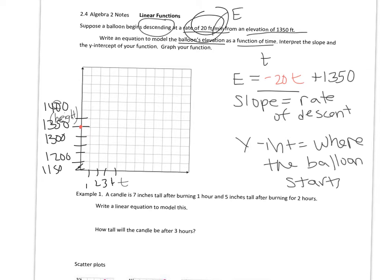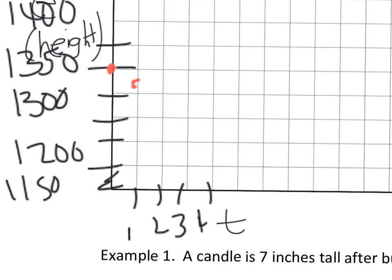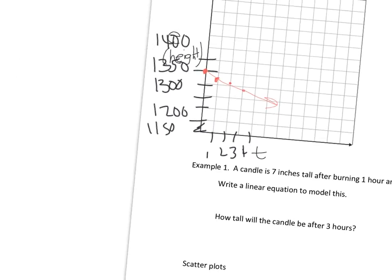Starting at 1350 as the initial amount, you go down 20 and right 1 to get approximately 1330, then down 20 right 1 to 1310, then down 20 right 1 to 1290, and so on. It's a constant rate of change. I didn't graph anything to the left because we're not talking about negative time — that's why we stay in the first quadrant.